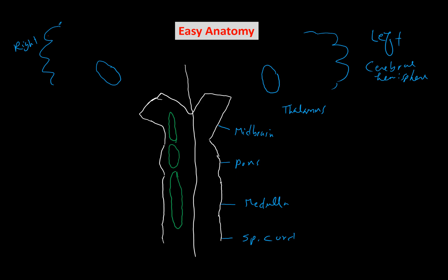Welcome to Easy Anatomy. I'd like to talk about the pathway of sensation from the face, which we can call the trigeminal pathway. The trigeminal pathway carries sensation from the face up to the cerebral hemisphere, and this includes pain, temperature, and touch, as well as proprioception. We call it trigeminal because it refers to cranial nerve number five — the trigeminal nerve.